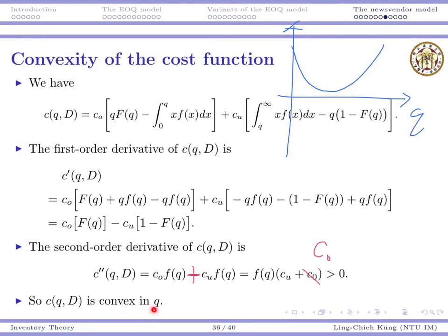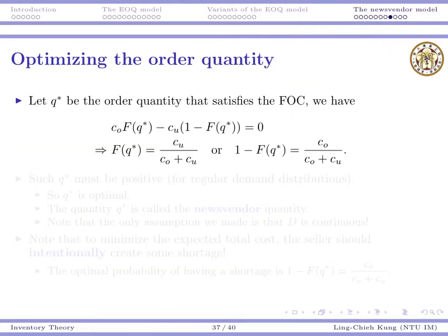It's very reasonable that the cost function would be something like this. When Q becomes larger, we have a U-shape cost function. Anyway, mathematically, we have shown that this guy is convex.